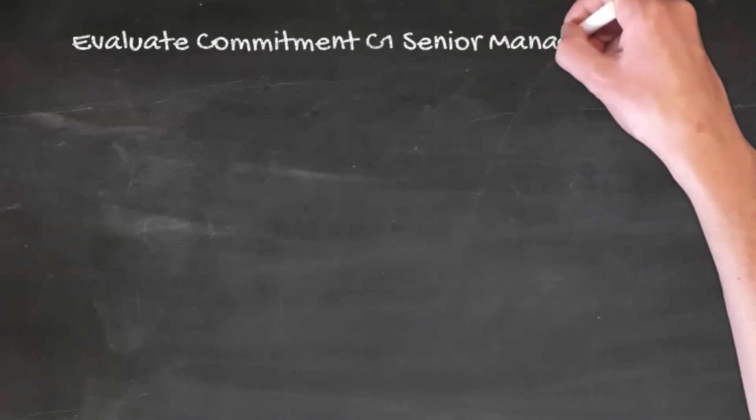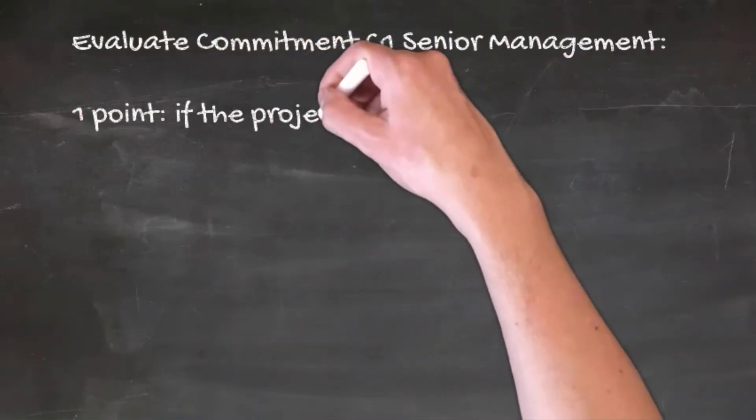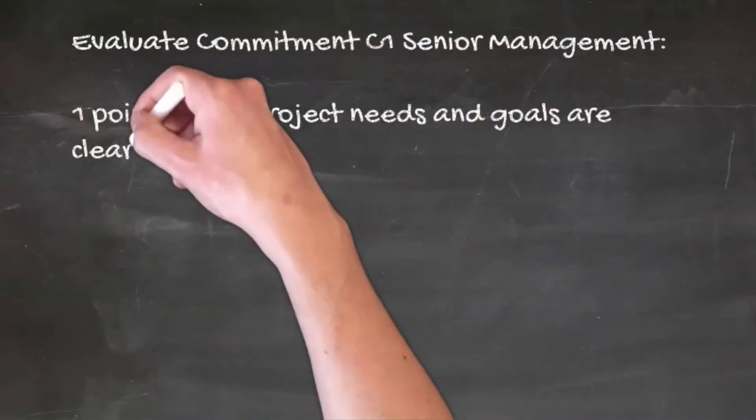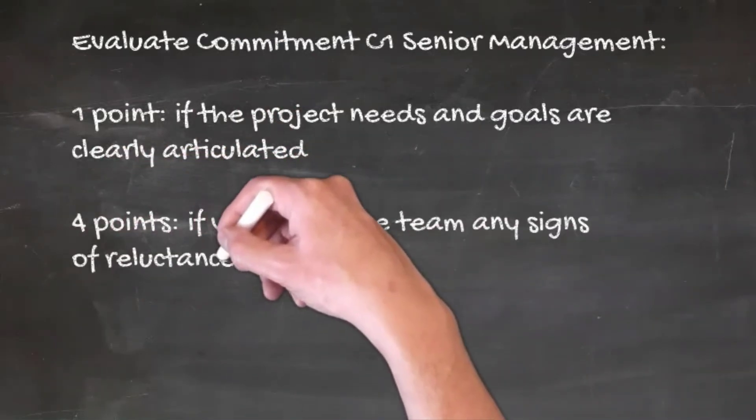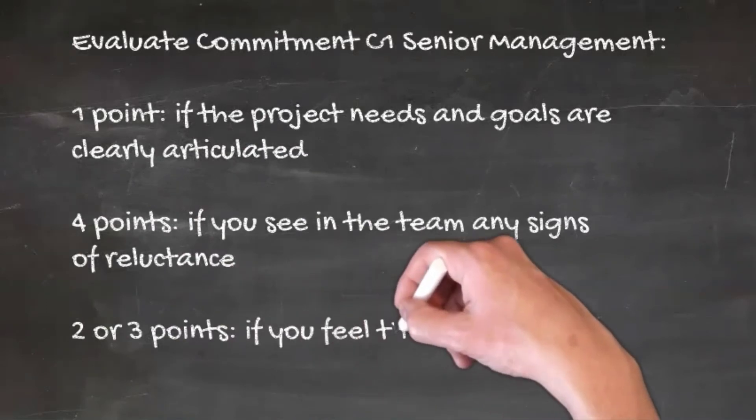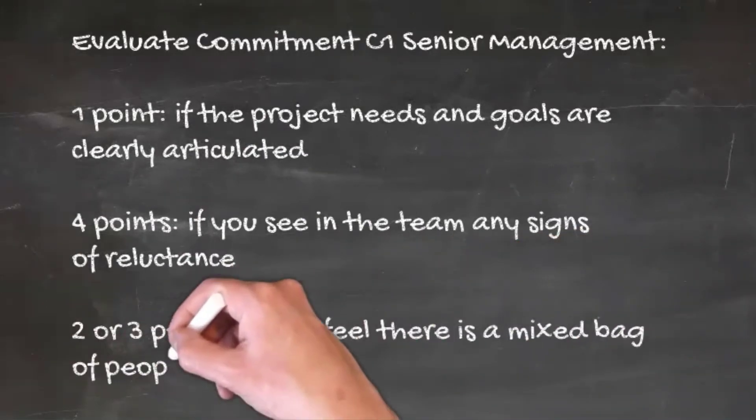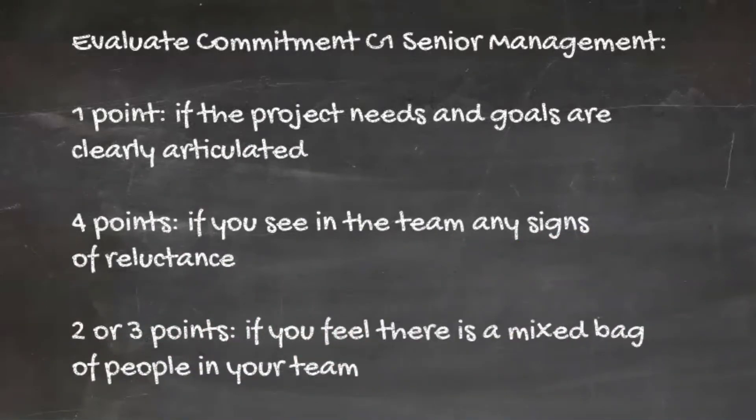To specifically evaluate the commitment of C1 senior management, you're going to give one point if the project needs and goals are clearly articulated. You'll give four points if you see in the team any signs of reluctance. And again, you'll give two or three points if you feel there is a mixed bag of people in your team.